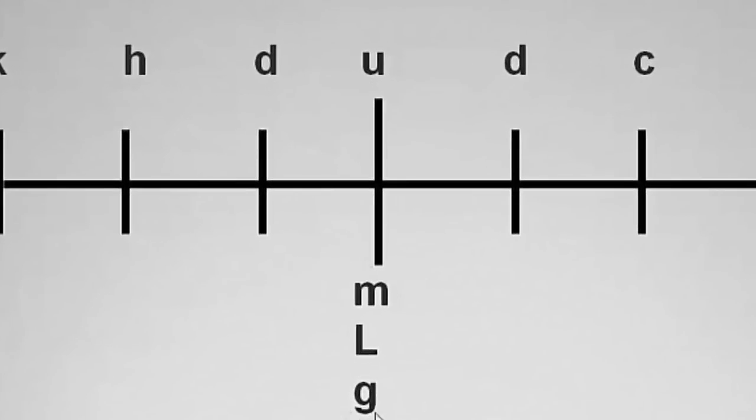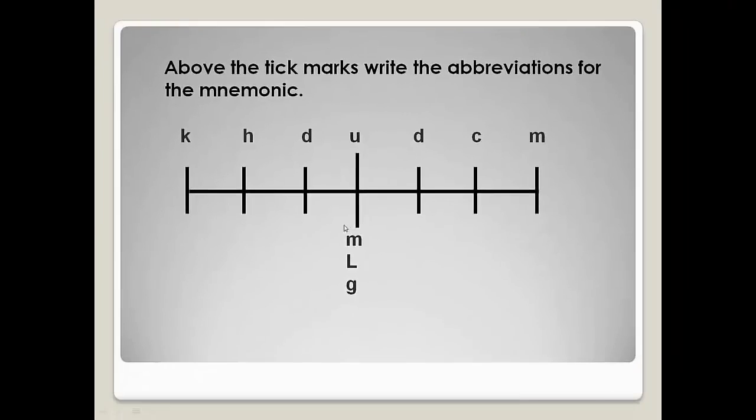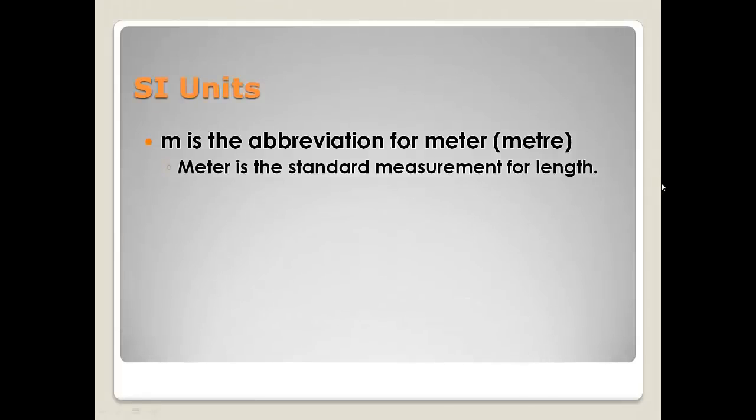Then, above each of the individual tick marks, you write the abbreviations for the mnemonic. Underneath the U, I put these letters to help me remember what my root words are for the metric system. You don't have to put those if you don't want to, it just helps me. So what do those letters stand for? M is the abbreviation for meter. Sometimes it's spelled with E-R at the end, and sometimes with R-E. In the United States, we use the E-R spelling. A meter is the standard measure for length. It's a little bigger than a yard.